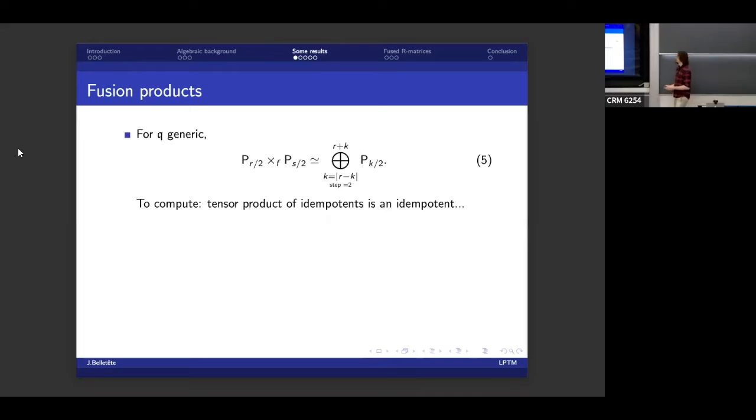So in other words, finding the structure of a module is in a way equivalent to solving it. So now the fusion product. For q generic, it's very simple. I have two projectives P_{R/2}, P_{S/2}. And when I fuse them, I get this nice direct sum. So those of you who are familiar with quantum groups, you might recognize that this is exactly the same tensor product rule as in U_q SL_2. It is the same as SL_2 when q is generic.